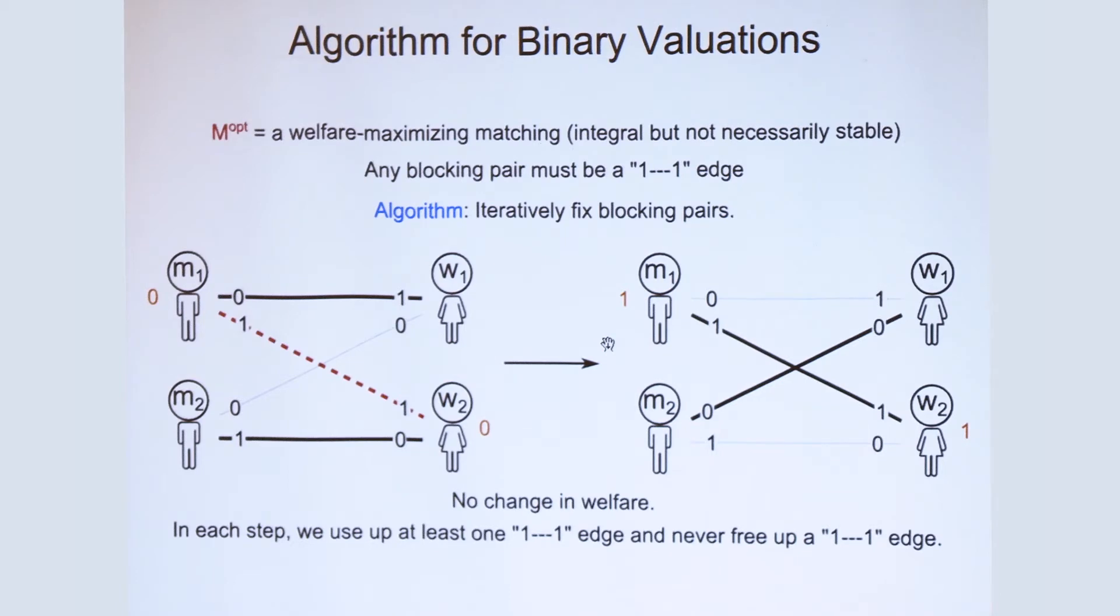More importantly though, whenever we do such a toggle operation, we consume a one-one edge, and we never free up a one-one edge. And because there are only so many one-one edges, this algorithm has to terminate in quadratic time.